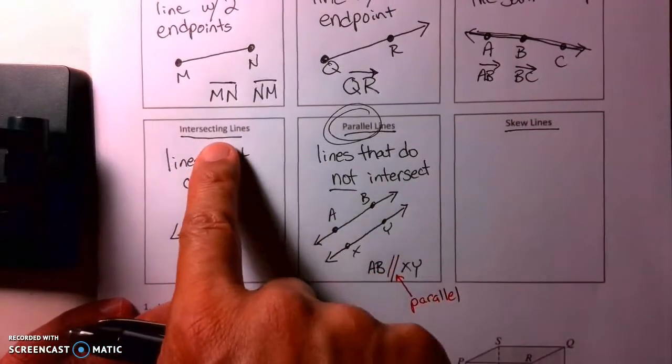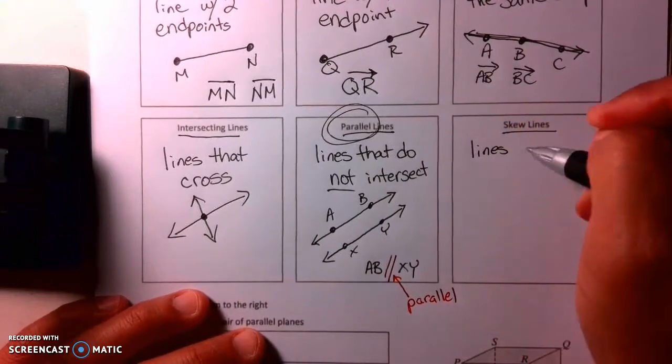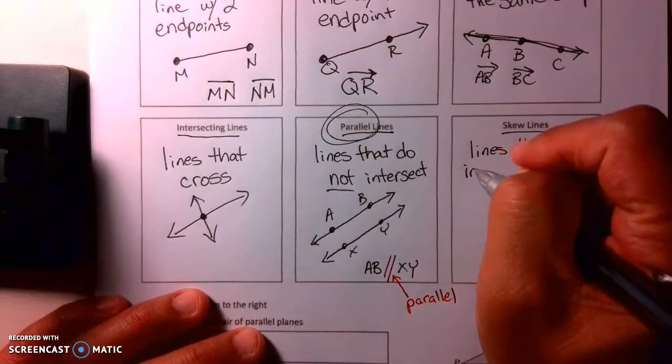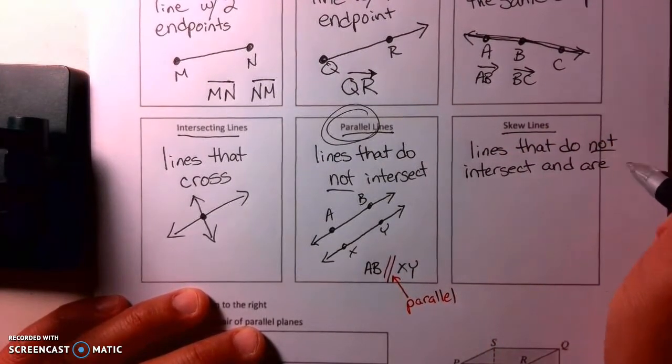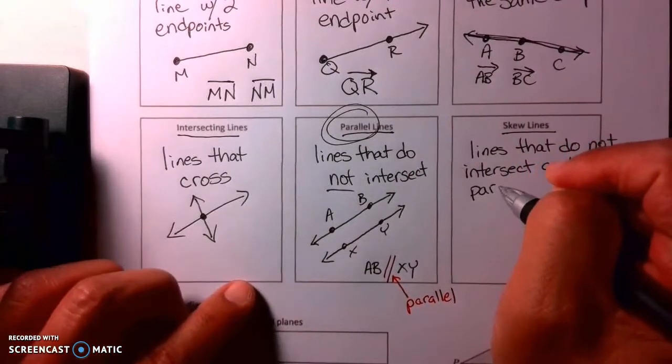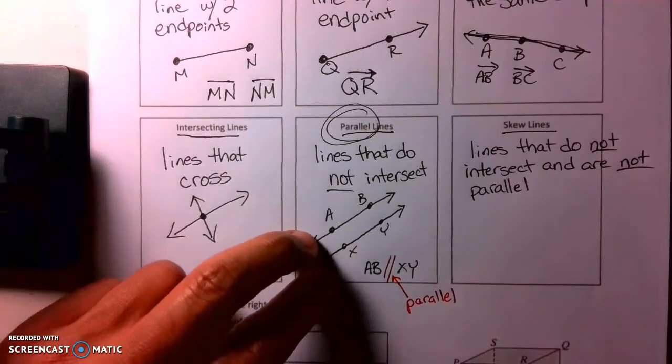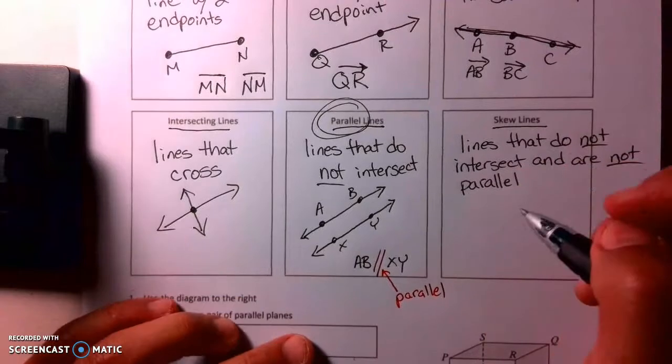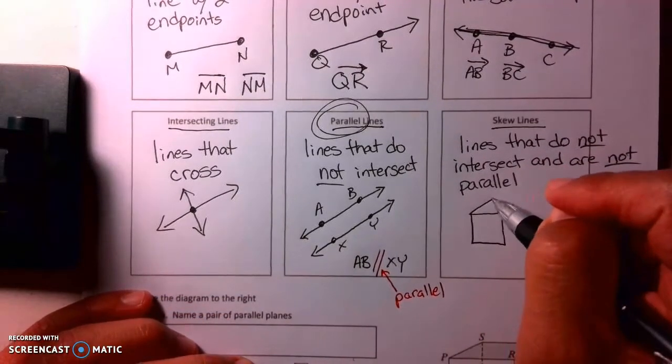Skewed lines - now you probably already know what intersecting and parallel were. But skewed lines are lines that do not intersect and are not parallel. So what the heck are skewed lines? If they don't touch each other, so they don't intersect, and they're not considered parallel, well what is this? Now this is in the three-dimensional world.